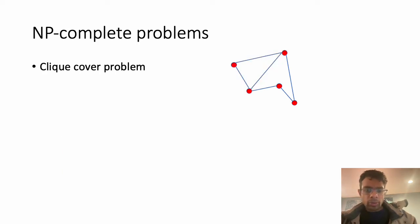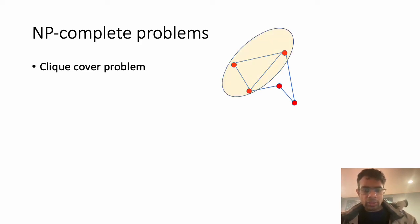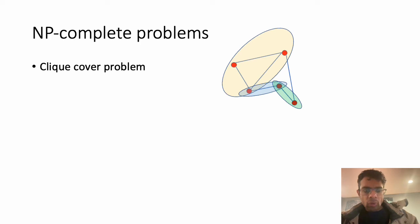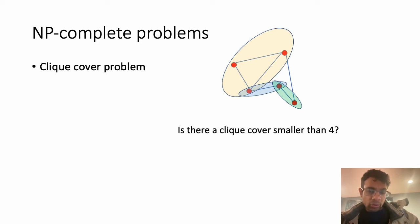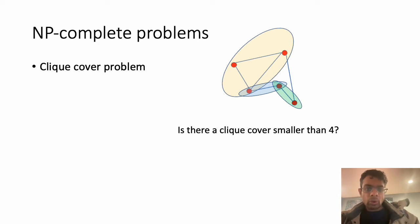Another related problem is the clique cover problem: what is the smallest set of cliques that covers the whole graph? In the previous graph, the largest clique has size 3 and the other cliques have size 2; a collection of three cliques covers all vertices. To convert it to a decision problem: 'is there a clique cover with size less than 4?' — the answer would be yes. The decision version of the clique cover problem is also in NP-complete.